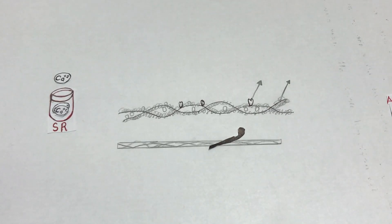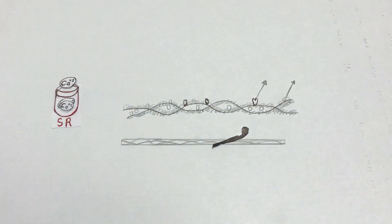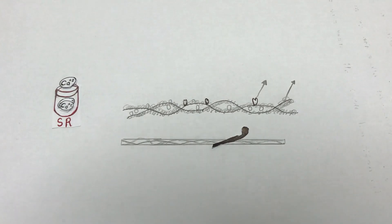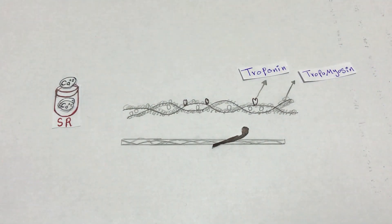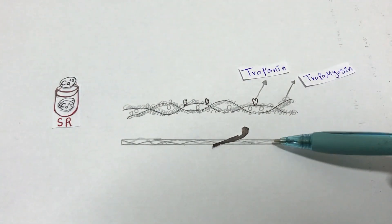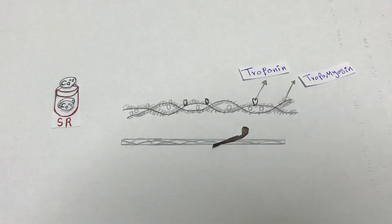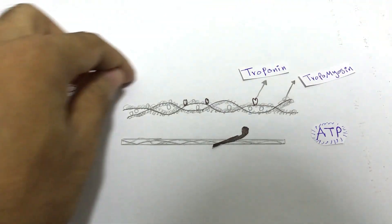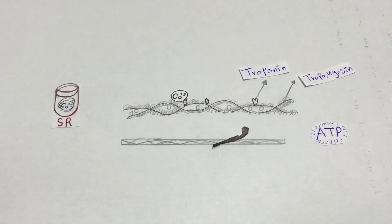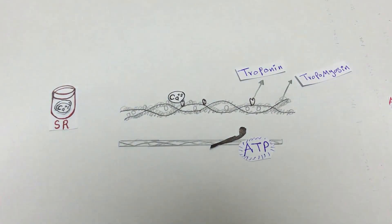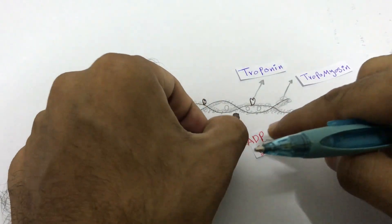Muscle contraction is controlled by calcium ions. The thin filament is associated with regulatory proteins called troponin and tropomyosin. When the muscle is relaxed, tropomyosin blocks the binding site on actin. When calcium is high enough and ATP is present, calcium ions bind to troponin, displacing tropomyosin and exposing the myosin-binding site on actin. This allows myosin to attach, forming a cross-bridge via ATP hydrolysis to ADP and phosphate, and then the process of contraction happens.